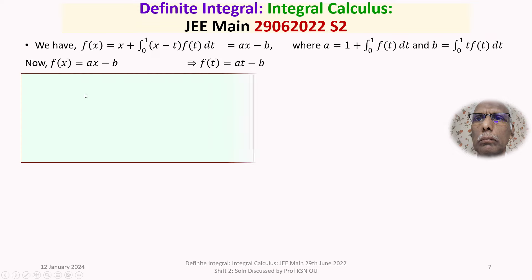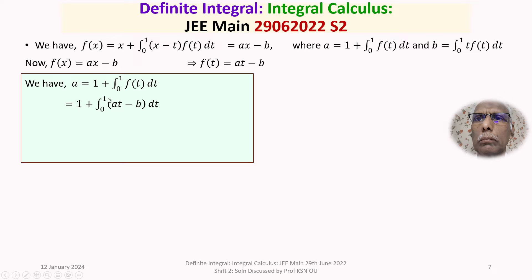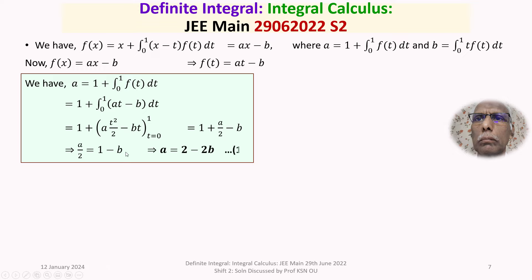To evaluate a: a = 1 + ∫₀¹ f(t) dt = 1 + ∫₀¹ (at − b) dt = 1 + [at²/2 − bt] evaluated from 0 to 1 = 1 + (a/2 − b). So a = 1 + a/2 − b, which gives a − a/2 = 1 − b, i.e., a/2 = 1 − b. Therefore a = 2 − 2b. We call this Equation 1.